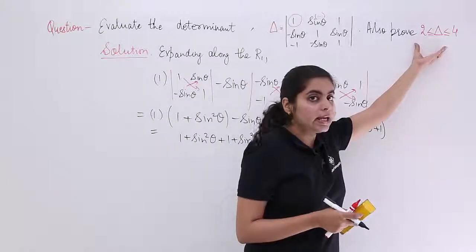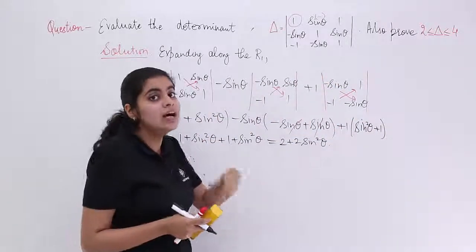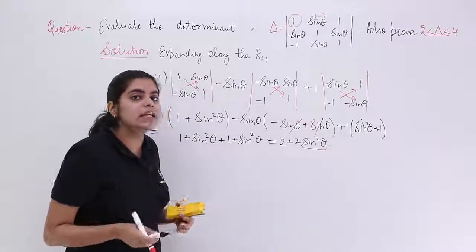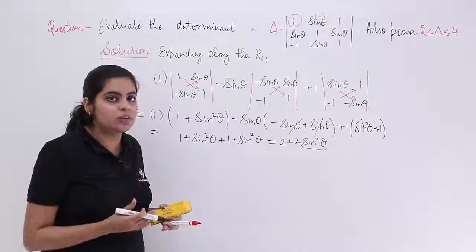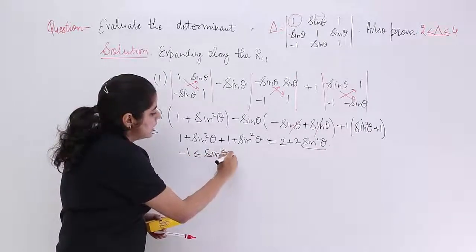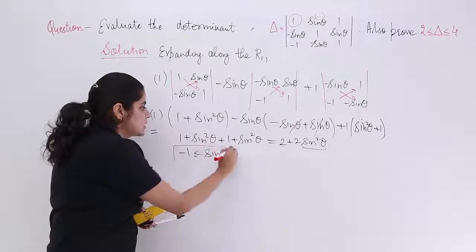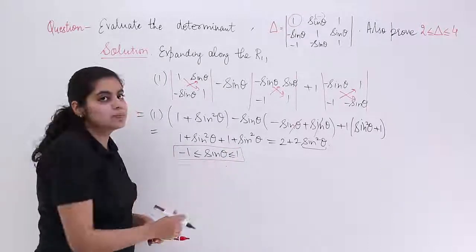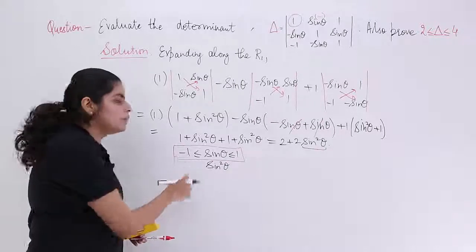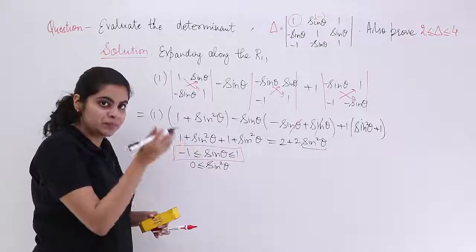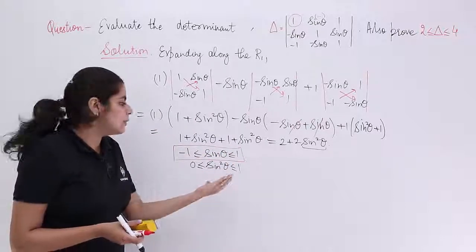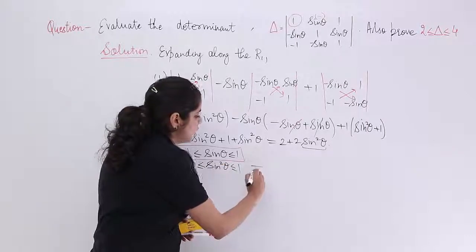Now for the second part — we need to show that this value of delta (2 + 2sin²θ) lies between 2 and 4. This involves sin²θ, and we know sin θ lies between −1 and 1. The proof is dependent on sin theta's domain. Since squaring always gives a positive result, sin²θ will never be −1; it starts at a minimum of 0 and a maximum of 1.